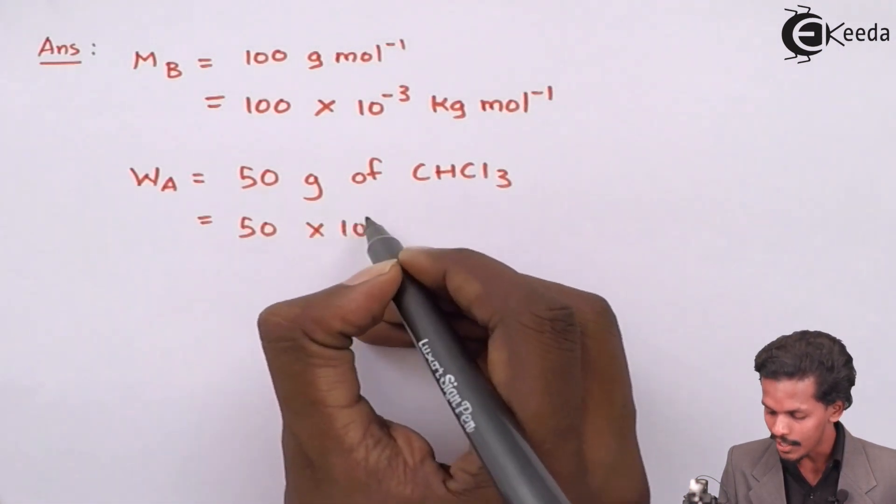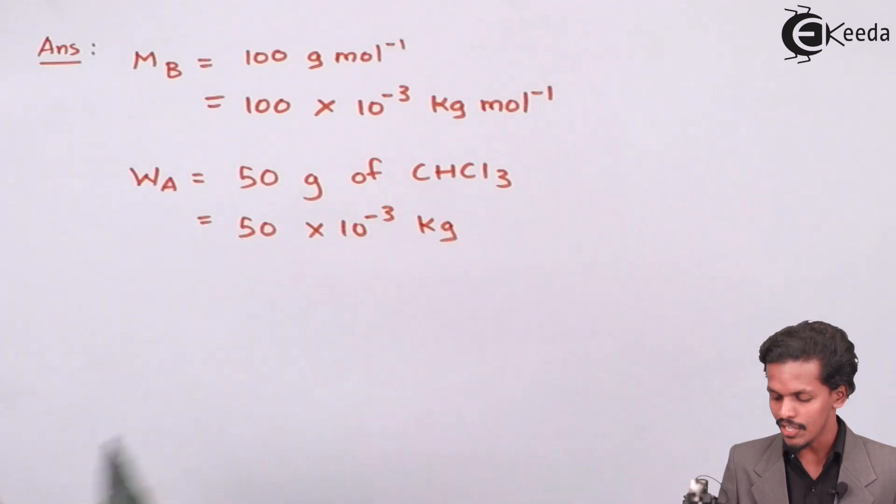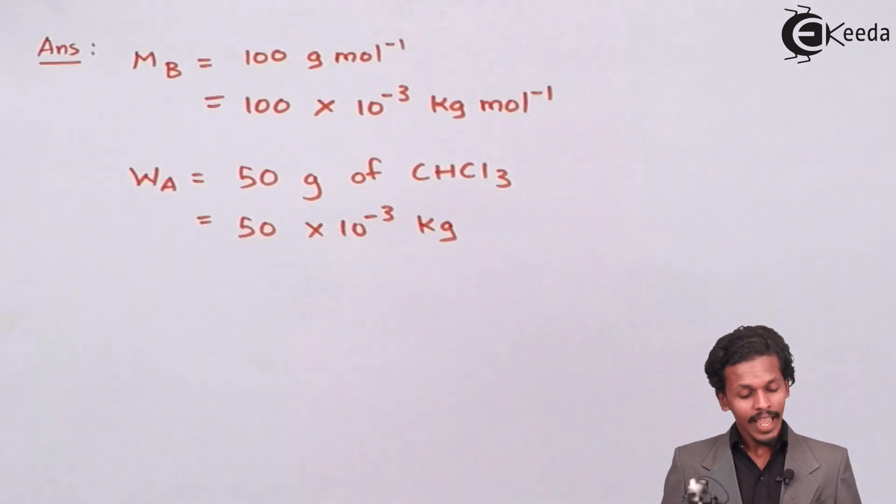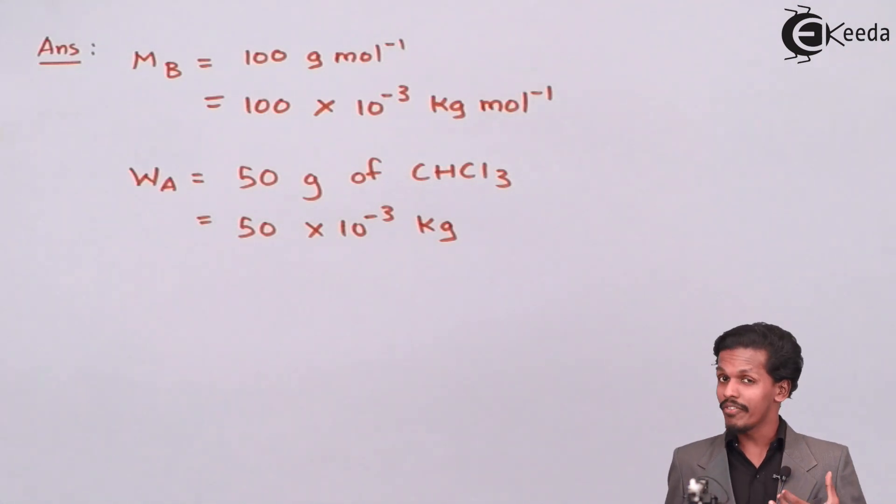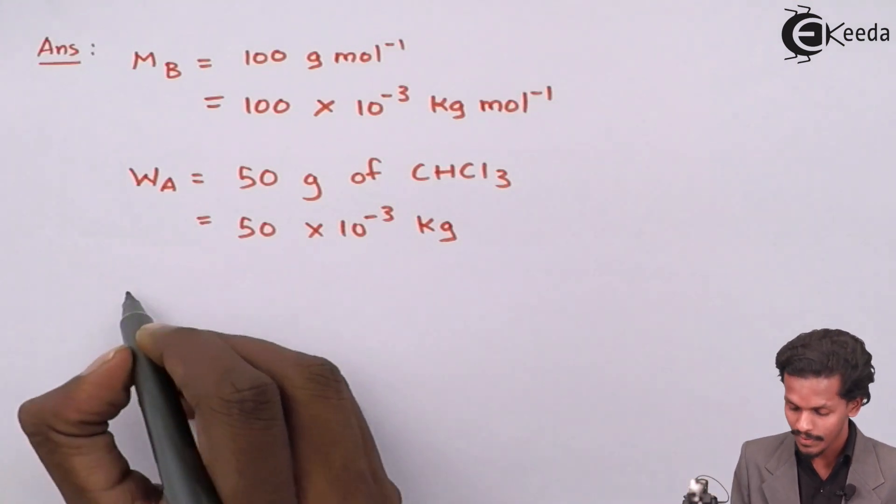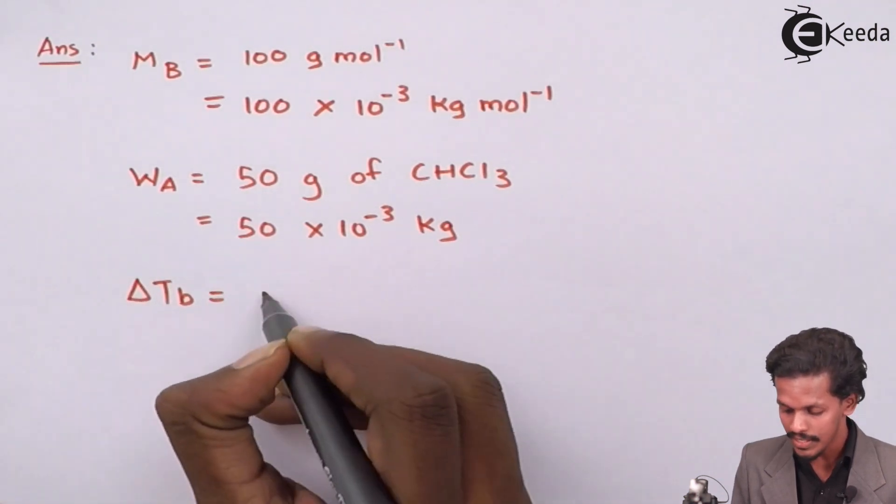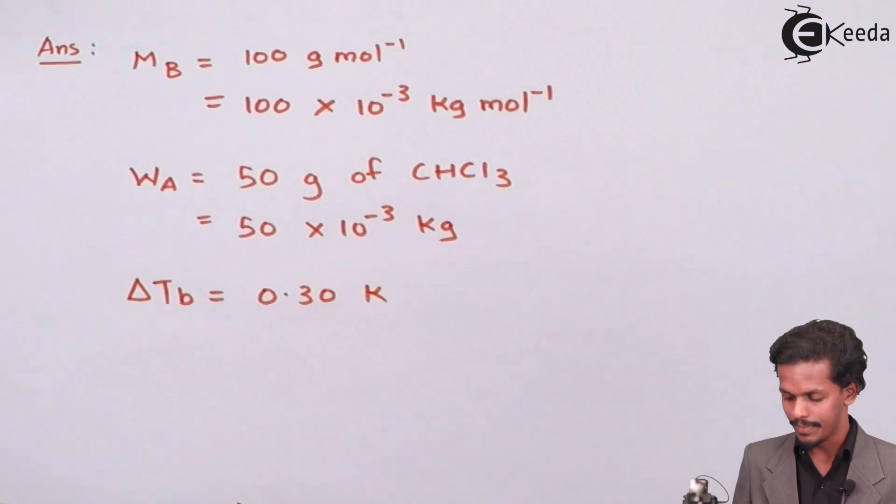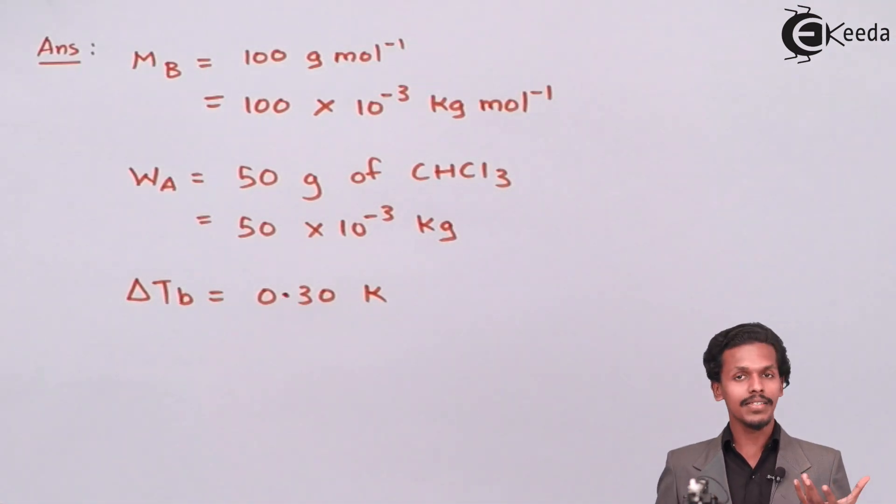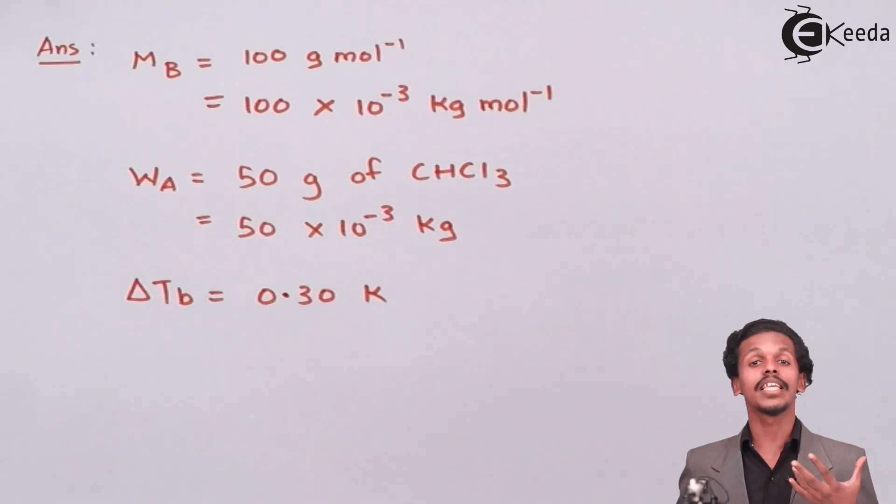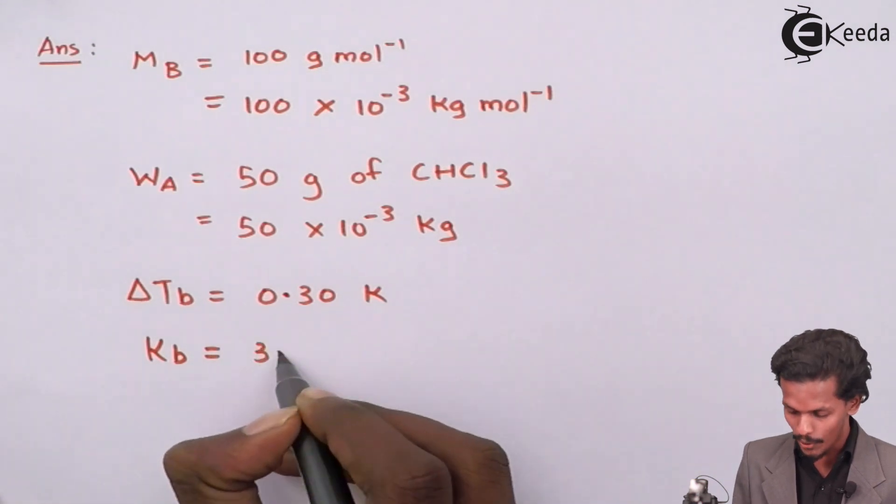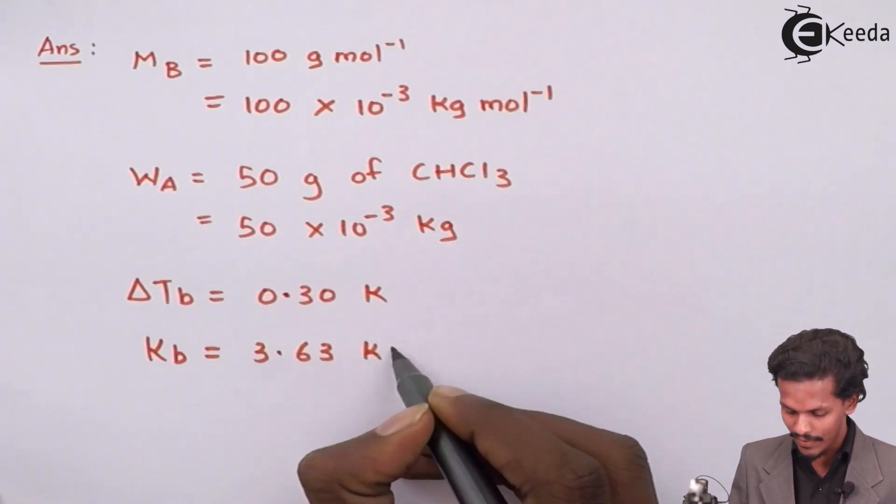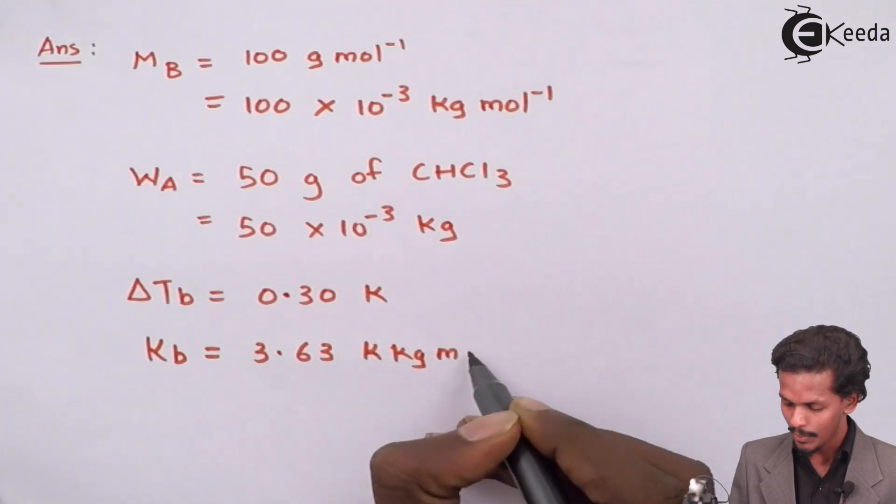So 50 into 10 raised to minus 3 kg. And the rest is that the elevation in boiling point which has been raised is now 0.30 Kelvin, which means delta Tb is 0.30 Kelvin. And at last we have the ebullioscopic constant which has a value 3.63 Kelvin kg per mole.